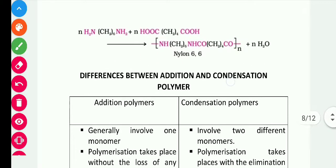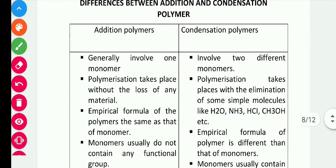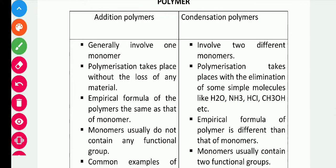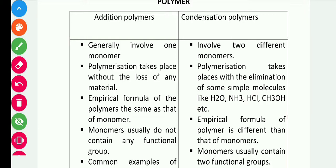Now let's look at the differences between addition and condensation polymerization. First, addition polymerization generally involves one monomer, while condensation polymerization involves two monomers. Second, addition polymerization takes place without the loss of any material — all the molecules chain together with no side product. In condensation polymerization, there will be a side product such as water, ammonia, or alcohol.